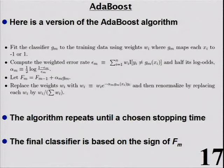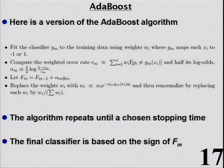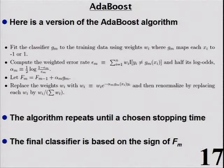You go through, grow the tree with those new weights, compute the weighted error rate for the new tree, compute alpha = (1/2) * log((1-e)/e), and update again. You add alpha × g for the next classifier, so your final classifier f is the sum of alpha × g's at each stage. At each stage you have a tree g and some multiplier alpha, and you threshold on the sign of that sum.